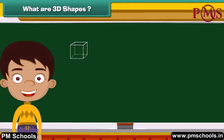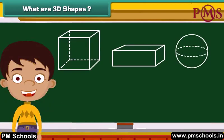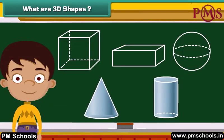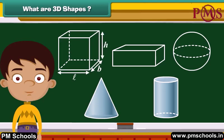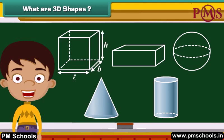Hey, look at these shapes. What did you notice? These shapes have three dimensions — length, width, and height. Therefore, we call these shapes three-dimensional shapes.